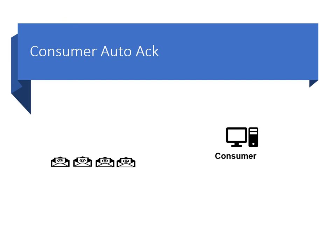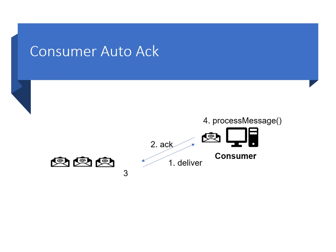Consumers also need to acknowledge message receipts because upon consumer acknowledgement, the broker is free to mark a message as delivered and remove it from the queue. There are two modes for acknowledgement: either automatic or manual. With automatic acknowledgement, messages are acknowledged as soon as they are delivered to the consumer and before they're processed. This provides the lowest latency message delivery. As illustrated on the slide, a message is delivered to the consumer, it is acknowledged, once acknowledged it can be removed from the queue, and then eventually the consumer processes the message.